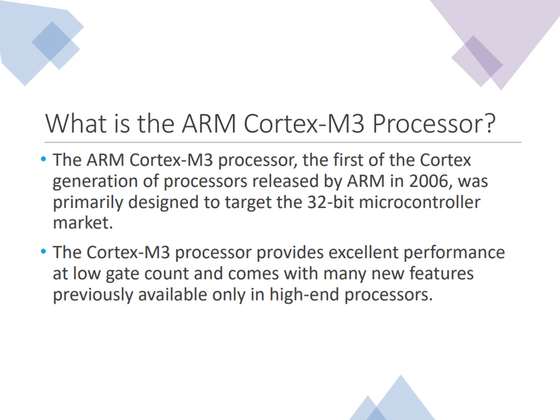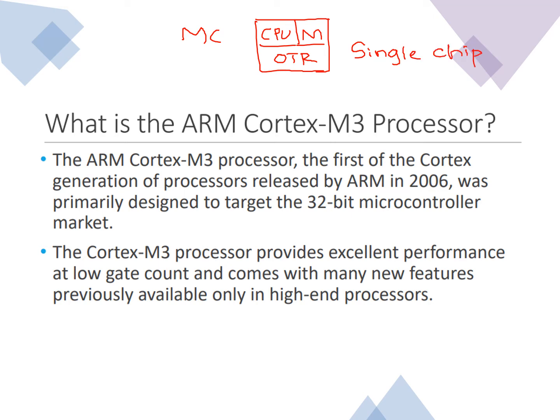To clarify the difference: a microcontroller has a CPU, memory unit, and other units all embedded or packed on a single chip. This means you cannot modify the features — for example, if the RAM is 512 KB, you cannot extend it externally.